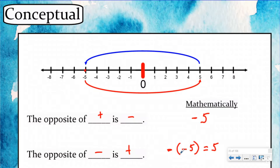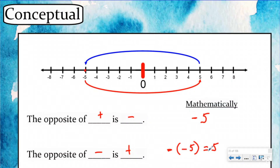And the opposite of negative five is positive five. Opposite of a negative is a positive. This is how you write it mathematically. A negative of a negative is a positive, because the opposite of negative five would be positive. So this is how you would write that.